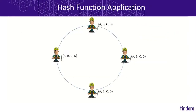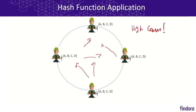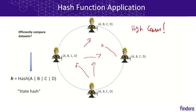How does this fit into the context of a distributed database? Say four parties are storing a simple dataset A, B, C, D. How could they efficiently check that they're all storing the same dataset? A naive approach would be for them to send each other their entire datasets, but this would be very inefficient. A more efficient way is to use the hash function to compute just a 32-byte value — a fingerprint of the database, called the state hash — representing the current state. They can all send these hashes to each other and check that they're the same. With very high probability, matching hashes means they are all storing the exact same dataset.